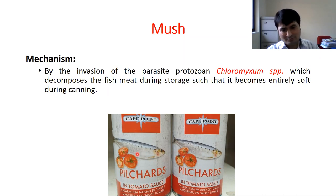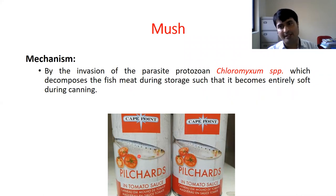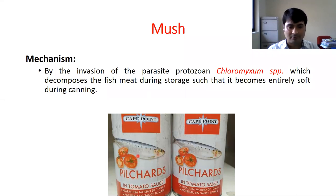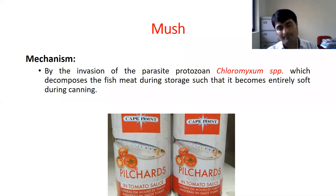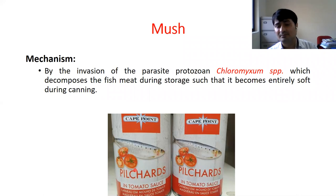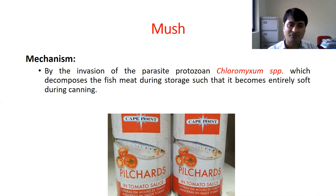Pilchard is a common name. The scientific name is different. Pilchard is a species of sardine — pilchard and sardine are both common names, but the scientific name is different. Pilchard is a species of sardine.